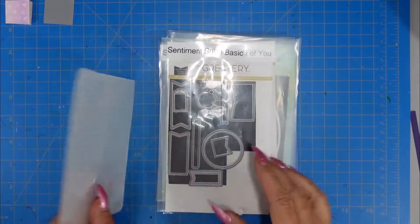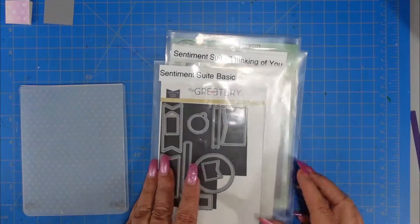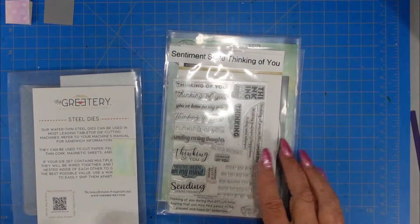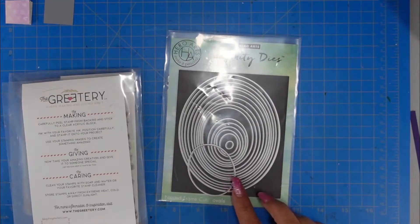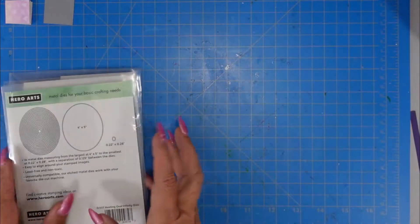In addition, I'm using the Swiss Dot embossing folder, the Sentiment Suite Basics and Thinking of You Sentiment Set from the Greetery, and then those Hero Arts Infinity dies.